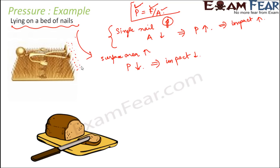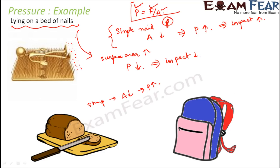Similarly, think of cutting vegetables or a loaf of bread with a knife — which knife would you prefer, a blunt one or a sharp one? Obviously a sharp one, because a sharp knife has a lesser surface area, so the pressure is more and therefore the impact is more, making cutting easier. Now think of a school bag — have you ever observed that the strap is always quite thick? The school bag is heavy and that weight is carried by your shoulders. If the strap is thick, the area is more, pressure is less, and your shoulders feel less pain while carrying the heavy bag. That is why school bags and backpacks always have thick straps.